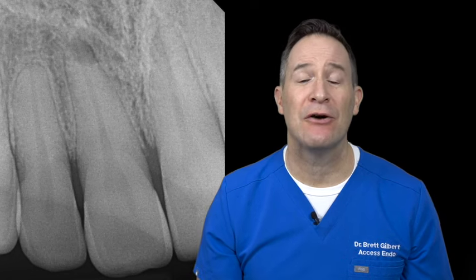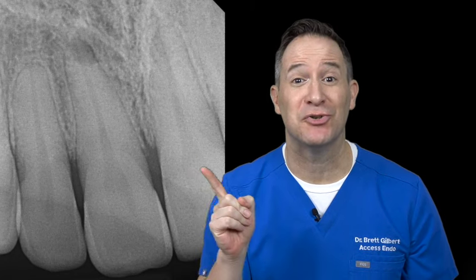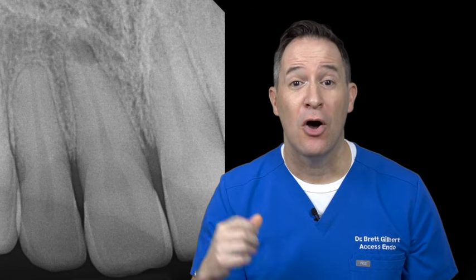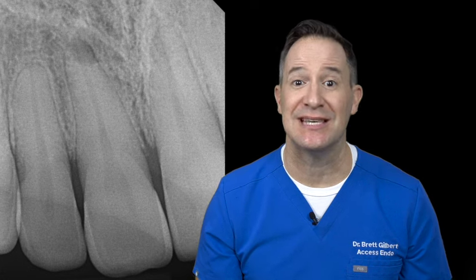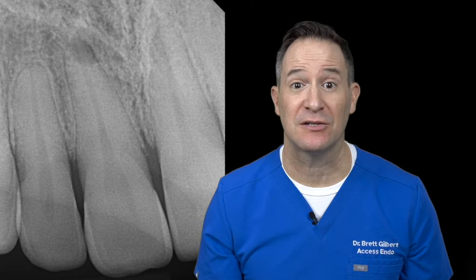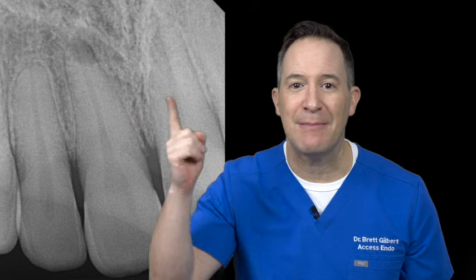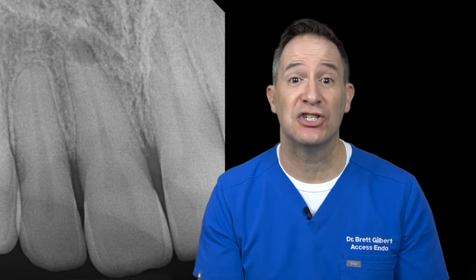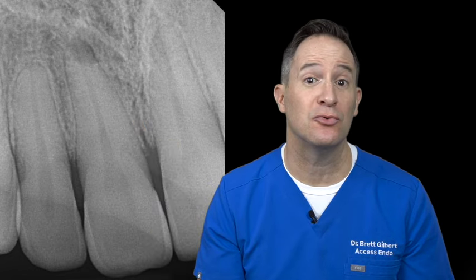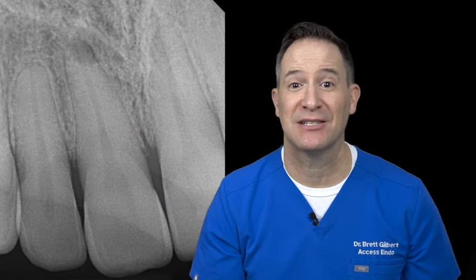As dentists, we've been challenged for decades with these two-dimensional images. On this image, you can see that there is some radiolucency near the apex of this tooth. But how do we interpret that? You can't really make heads or tails of what this is, or what the relationship of that radiolucency truly is to the apex of the tooth.